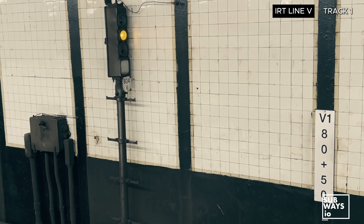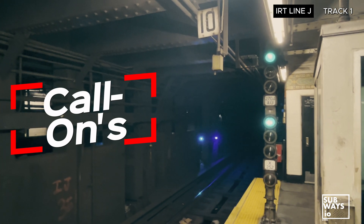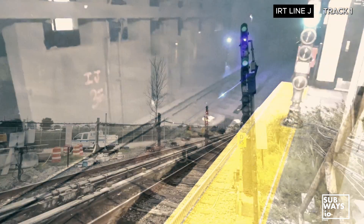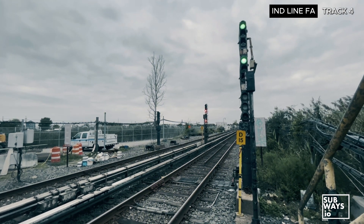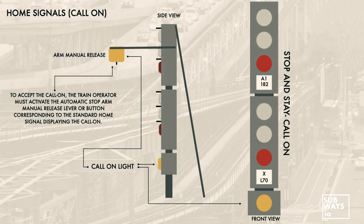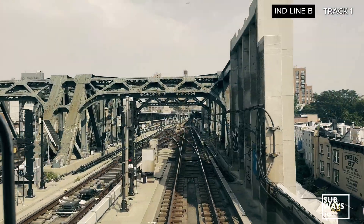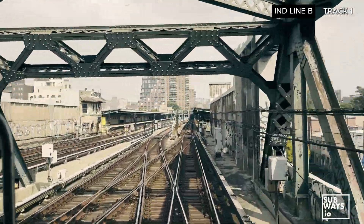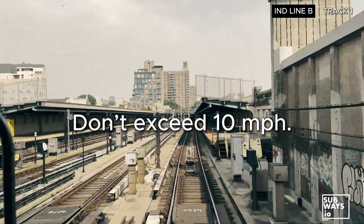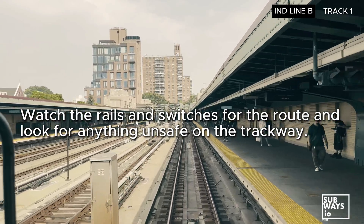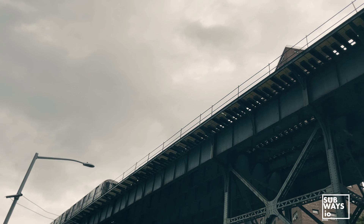If the key-by function only works with automatic and approach signals, what happens if there's an issue with a home or interlocking signal? If a train needs to pass a standard home signal displaying red over red, a special signal aspect known as a call-on can be issued by the tower or the rail control center, provided the switch is properly set. The call-on function can be activated using a manual arm release, though the setup may vary depending on the signal. When a call-on is authorized, the signal will display red over red with yellow. On a home signal, the operator should also observe the stop arm go down. Basic rules for both key-by and call-on procedures: do not exceed 10 miles per hour, be prepared to stop within one half of your range of vision, watch the rails and switches for the route, and look for anything unsafe on the trackway. All very important rules to proceed and operate with extreme caution.